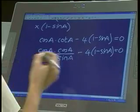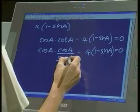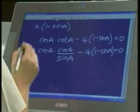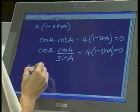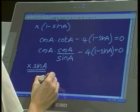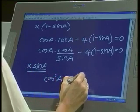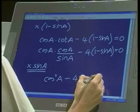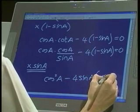After that, I've now got a new denominator, I've got the sine a, so I'm going to again get rid of that. Times sine a, I'm left with cos squared a minus 4 sine a, and the bracket 1 minus sine a.